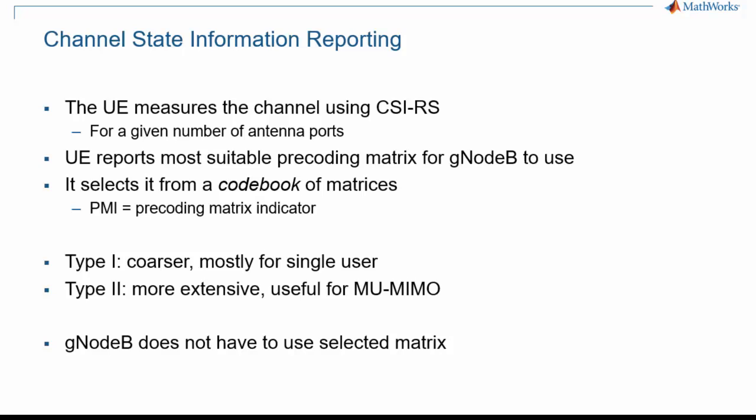Now we want to discuss what the UE does with CSI-RS it receives. The UE can determine the channel estimate, but feeding it back to the gNodeB would take a lot of bandwidth, because the channel varies across the measurement bandwidth. Therefore, the feedback is not directly the channel estimate, but instead the index among a set of matrices that would provide the best beamforming. This set of matrices is defined in the standard. The larger the set, the more accurate the representation, but the costlier the feedback. Two types of codebooks are defined in the standard: Type 1 is coarser and hence cheaper to signal, whereas Type 2 is more extensive.